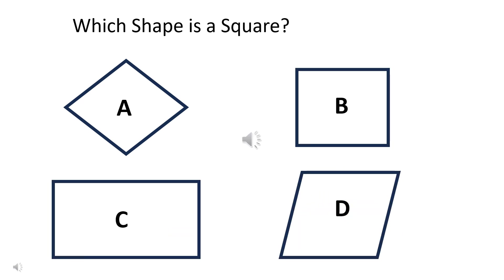Which shape is a square? The right answer is B.